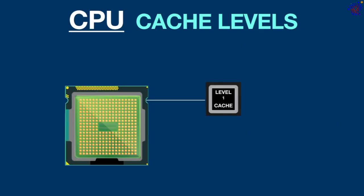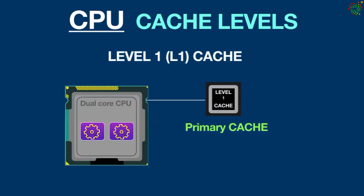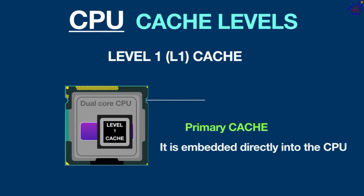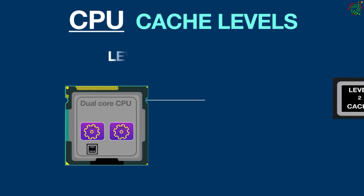CPU cache memory is typically divided into three levels. Level 1 cache, also known as primary cache, is the smallest and fastest type of cache memory. It is embedded directly into the CPU, allowing it to operate at the same speed as the CPU.